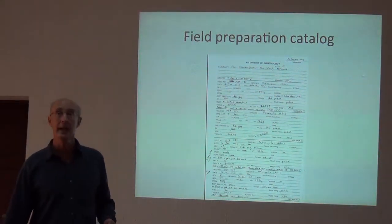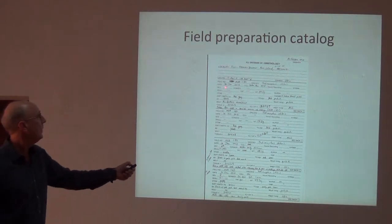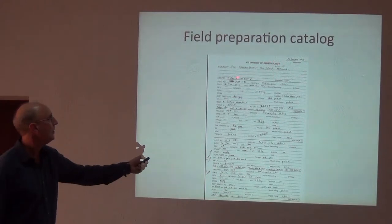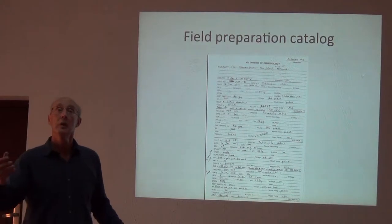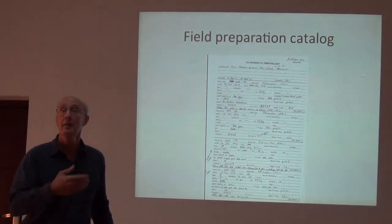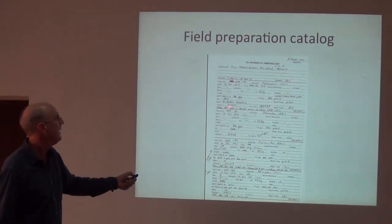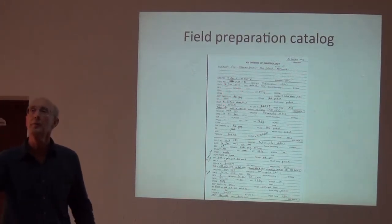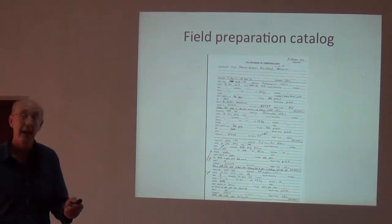These days, we take a field prep catalog that actually has prompts of data. There's a field catalog number, the scientific name, and obviously locality. If we ever had a locality for a site like Cameroon, Southwest Province — say we went up on the east slope of Mount Cameroon — we'd have that, coordinates, and elevation. These categories help prompt us as we're preparing the specimen, and we write down those data as we prep.